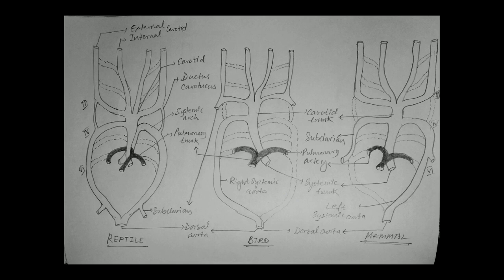This video is a continuation of the last video on arterial systems in vertebrates. Key points: reptilians show more similarity to amphibians and fishes, while birds and mammals share more features with each other, differing mainly in the right versus left systemic artery and the development of the subclavian artery. Dotted lines in the diagrams indicate disappeared arches; clear lines indicate functionally present arches. We'll continue with comparative anatomy of vertebrate hearts in the next session. Thank you.